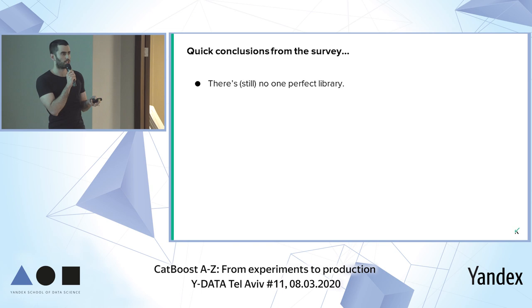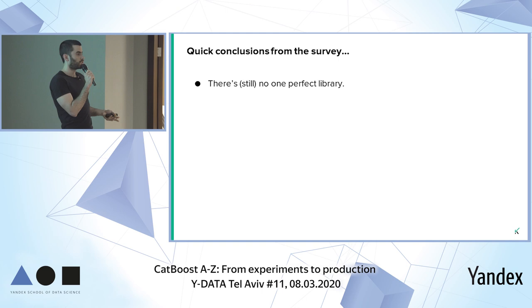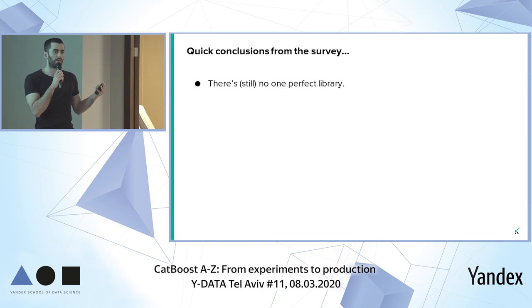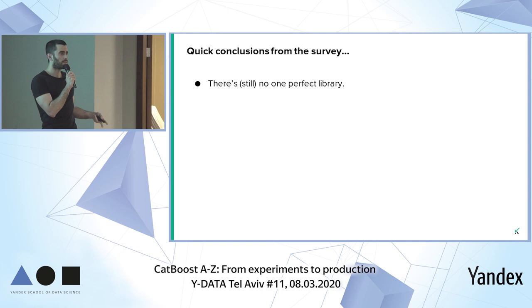We decided to survey and run an experiment comparing CatBoost, LightGBM, and XGBoost to find a faster training cycle. I have a blog post about it and I'll share the link at the end. The first main conclusion is that there is still no one perfect library — each has unique features and characteristics. When you approach a new machine learning problem, you should consider all three libraries.